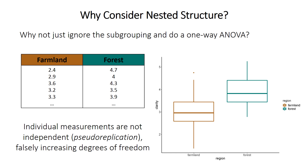Almost all statistical tests require that data points are independent of one another. This is something called pseudo-replication. Because the measurements aren't truly independent, the degrees of freedom — which are basically the sample size — are too high, incorrectly too high. That makes the test appear more statistically significant than it really should be, increasing our chance of getting a false positive signal.